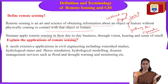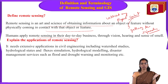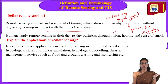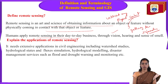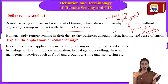Humans apply remote sensing in day-to-day life through vision, hearing, and sense of smell. Vision is remote sensing because we can see objects without touching them. Hearing — we are not touching the thing but we are able to hear. Sense of smell — we are not touching the smell, but we are able to sense it.